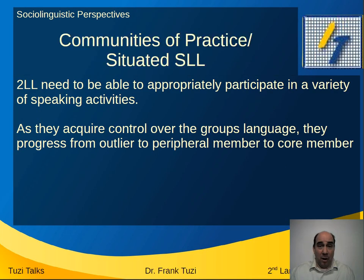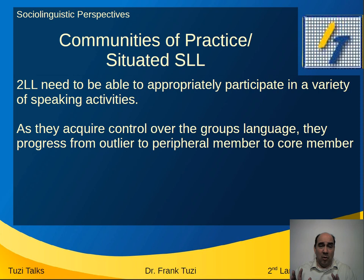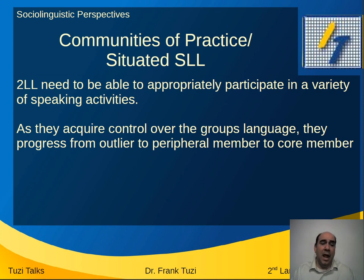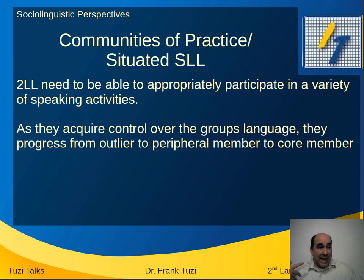There are people doing studies to try to analyze this — actually looking at a particular community and seeing how newcomers interact within the group. These are called communities of practice. Basically someone has not only learned language but now needs to join a science class or a subgroup in a business to perform some type of activity or task. This is a little community of practice — situated second language learning because it's a situation they have to be involved in. Second language learners need to be able to appropriately participate in a variety of speaking activities.